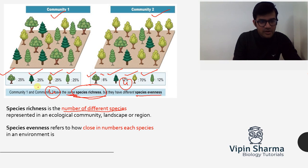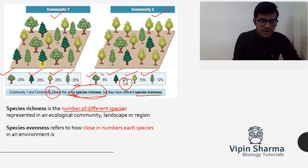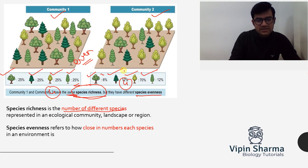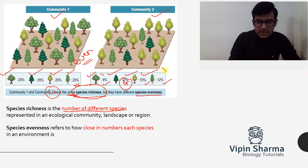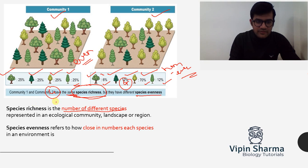But species evenness is different. In community one, species one, two, three, and four are all at 25% each — the numbers between species are not different at all, so it offers even species distribution. In community two, the percentages are 6%, 12%, 70%, and 12% — the numbers are different, so it is non-even. Community one and community two have the same species richness but different species evenness.